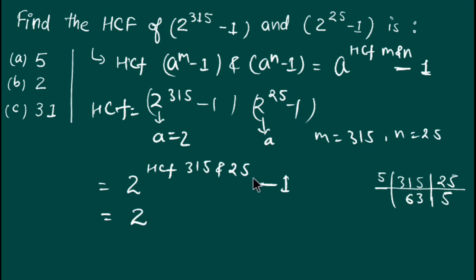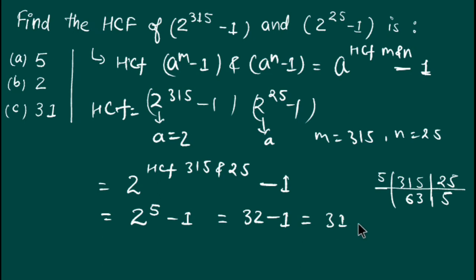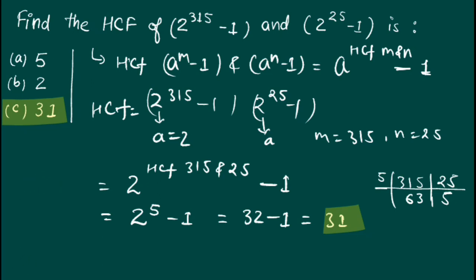So we have 2 to the power 5 minus 1. Since 2 to the power 5 is 32, 32 minus 1 is 31. So 31 is the HCF of these two numbers, and you can see 31 is the correct answer. I hope you understood the video. That's all for today, thank you for watching, bye bye and take care.